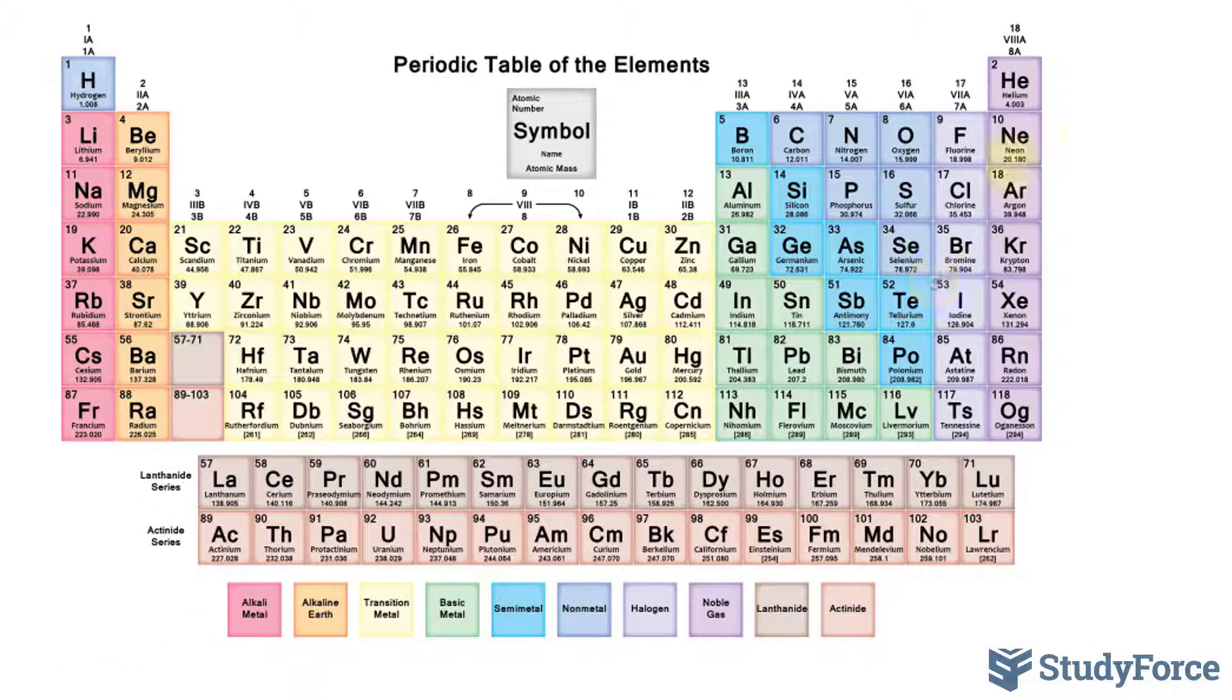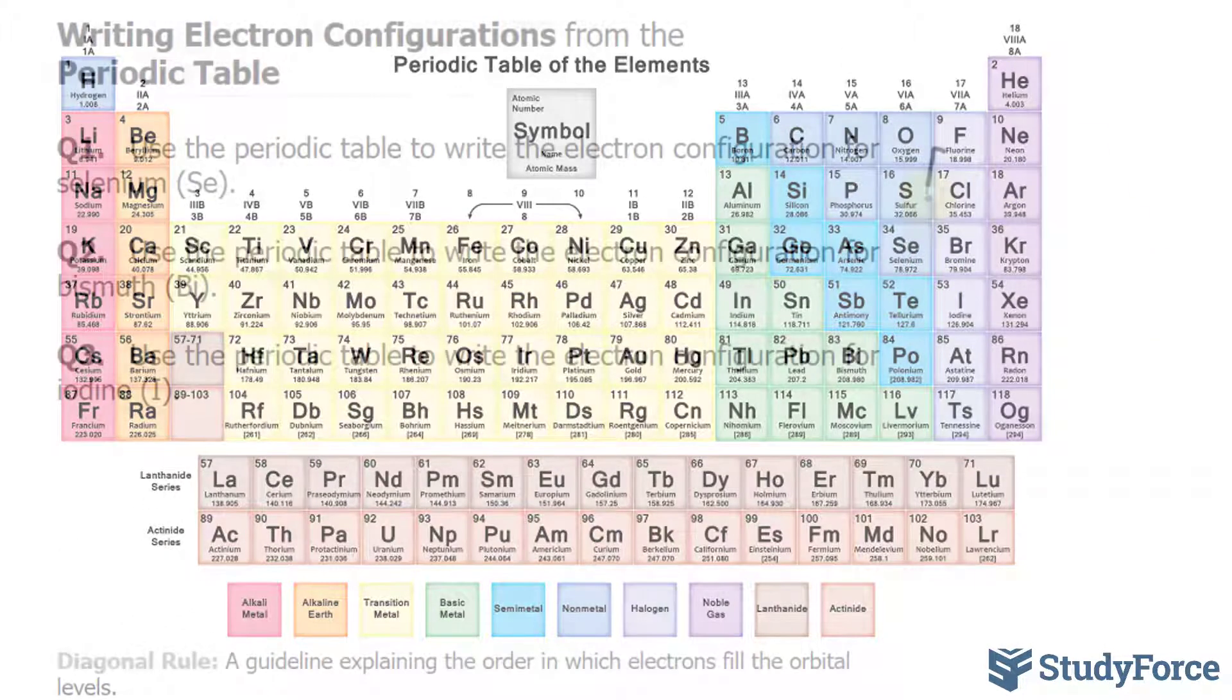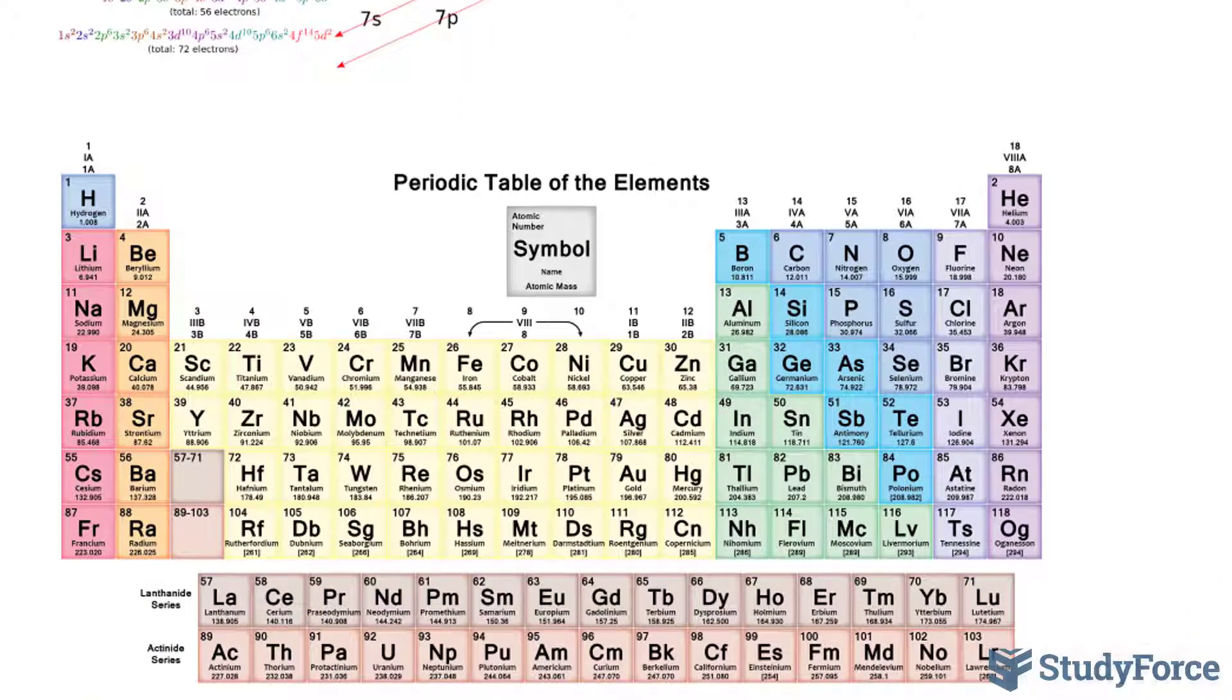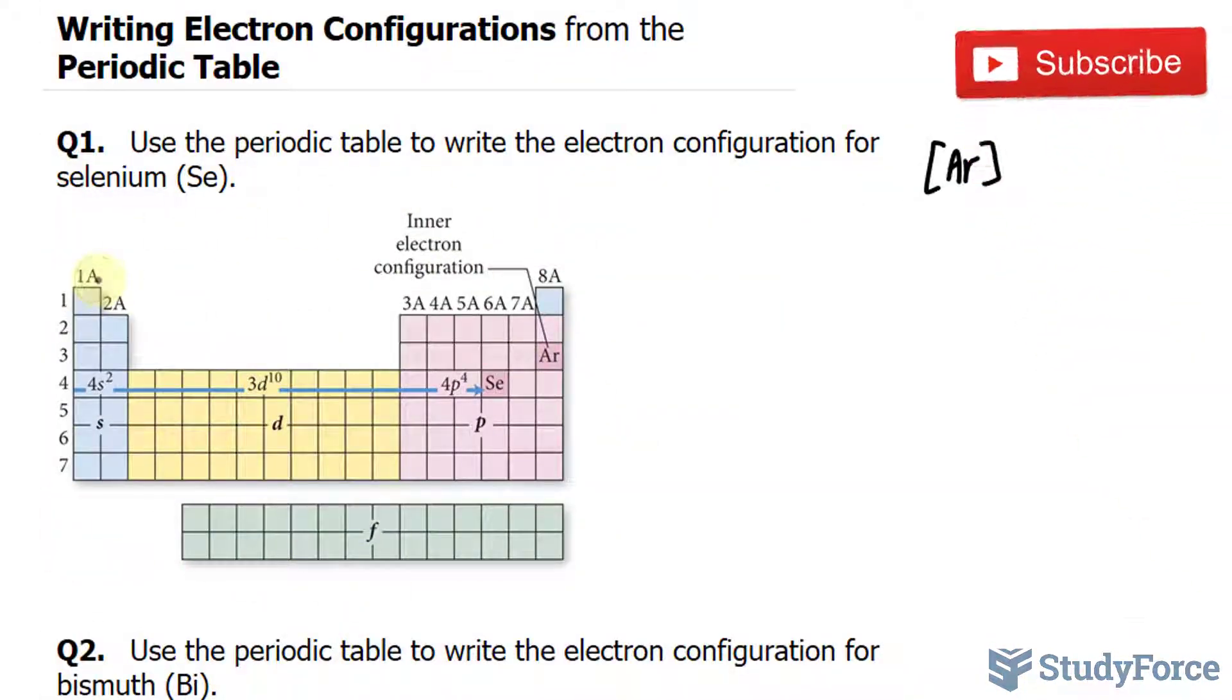So what we can do is write down Ar like this. If you take a look, selenium is in the fourth row. This block right here is the S block, this is the D, this is the P, and this is the F. For a clearer visual, this is what I'm referring to. After Ar, we can write down 4S2 because this orbital holds up to 2 electrons.